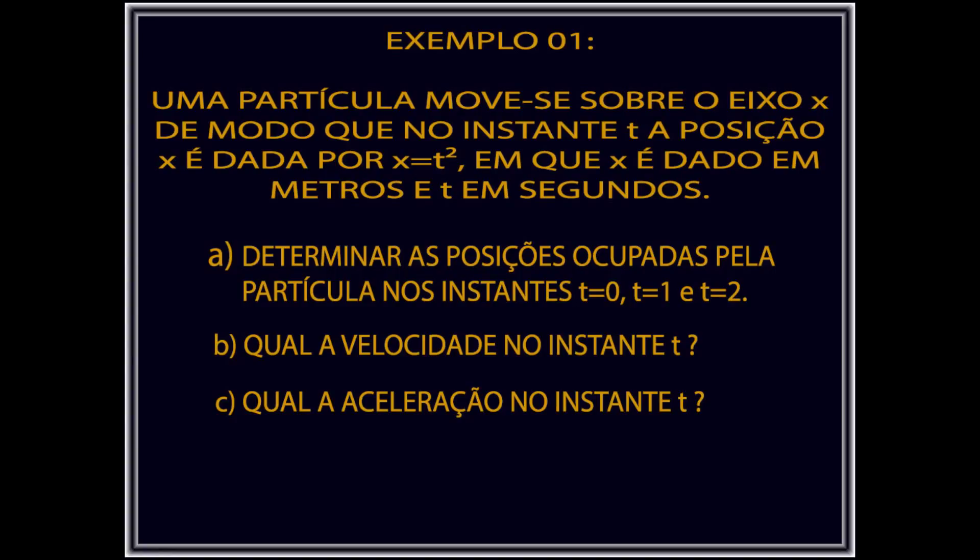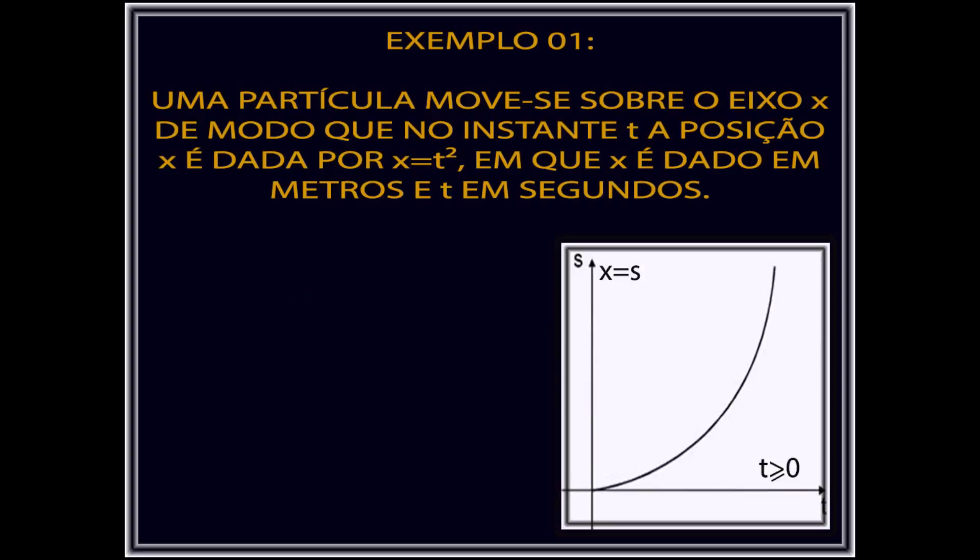Subíndice A: Determinar as posições ocupadas pela partícula nos instantes t igual a zero, t igual a 1 e t igual a 2 segundos. Com o gráfico do problema, onde o espaço s é igual a x no eixo da ordenada e o tempo t maior que zero no eixo das abscissas, encontramos com facilidade as posições espaciais utilizando a equação x igual a t ao quadrado.